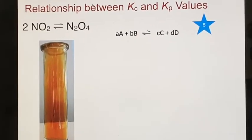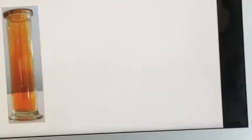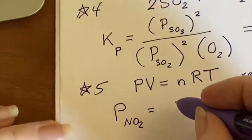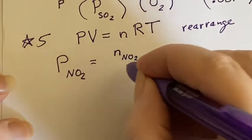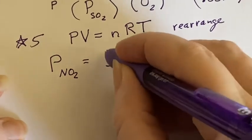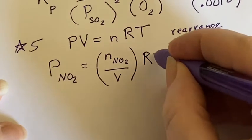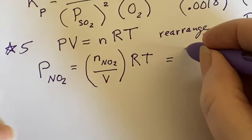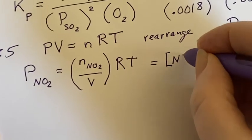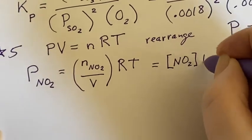So let's look at this one first. I could say that the pressure of the nitrogen dioxide would be the number of moles of nitrogen dioxide over the volume of the container times R and T. I can also say that that means it's the concentration of NO2 times RT.